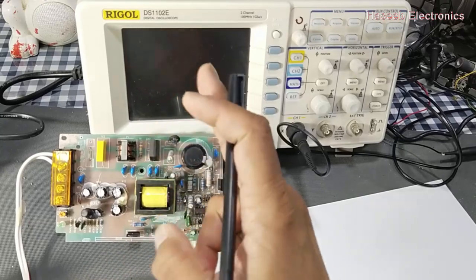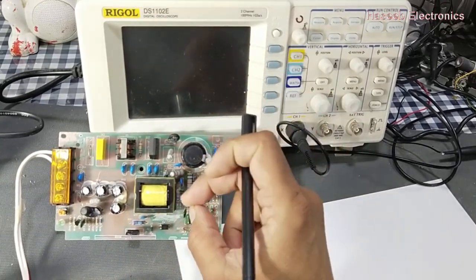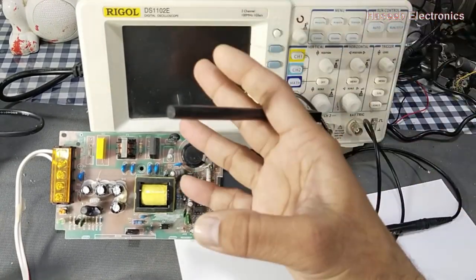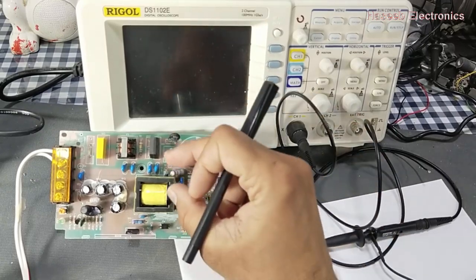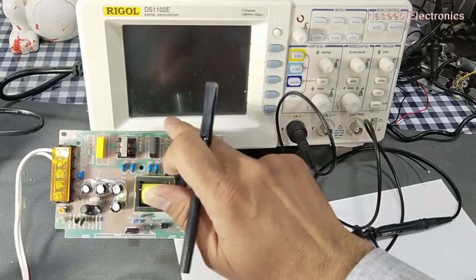We'll cover how to use an oscilloscope and what are the basic requirements to test a signal from any board. An oscilloscope is basically a device which will measure the signal and display it in graphical form.